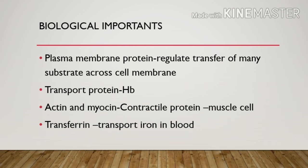The elemental composition of protein is: carbon 53%, hydrogen 7%, oxygen 23%, sulfur 1%, and nitrogen 16%. These are the key elemental percentages to remember.